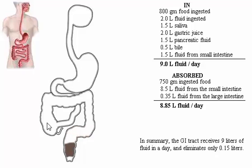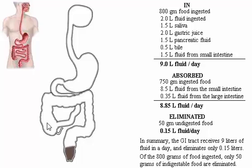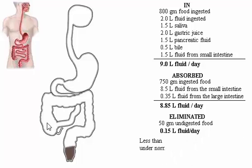In summary, the GI tract receives 9 liters of fluid in a day and eliminates only 0.15 liters. Of the 800 grams of food ingested, only 50 grams of indigestible food are eliminated. Less than 10% of ingested food is eliminated under normal conditions.